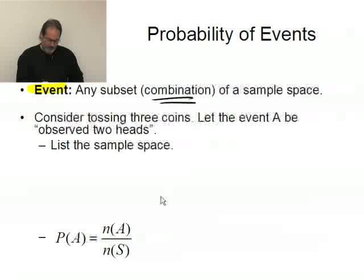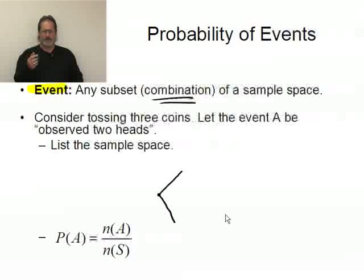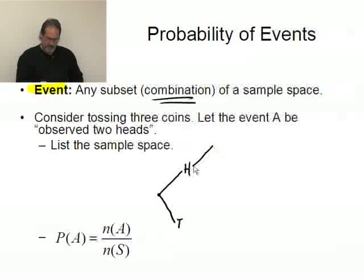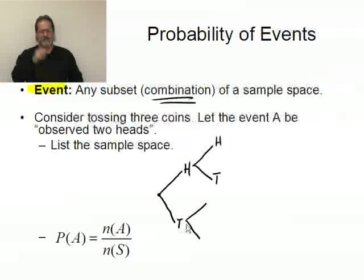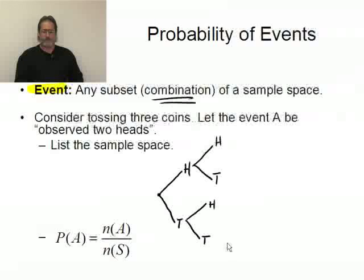I'm going to start off here and branch off. This first branch represents the first coin toss. I could get a head or I could get a tail. Now I'm going to branch again — the second branch represents tossing a second coin. If I got a head the first time, I could get a head or a tail. If I had a tail the first time, I could also get a head or a tail. This would actually be the sample space for tossing two coins.